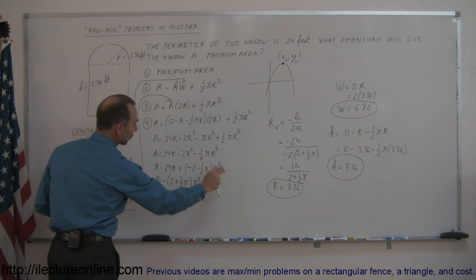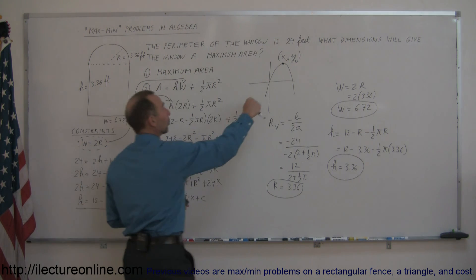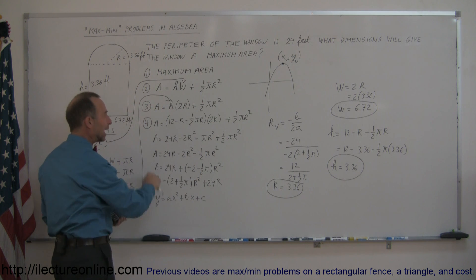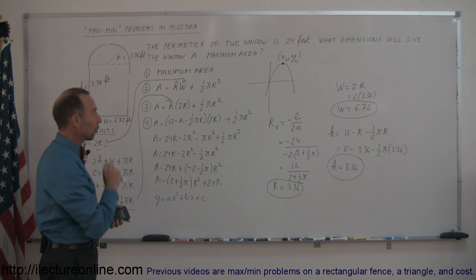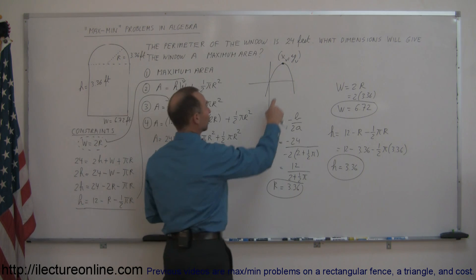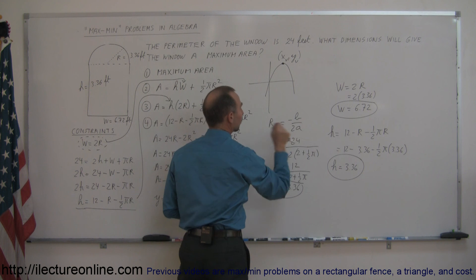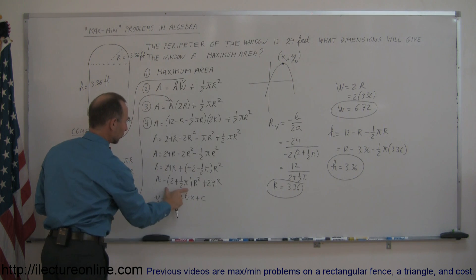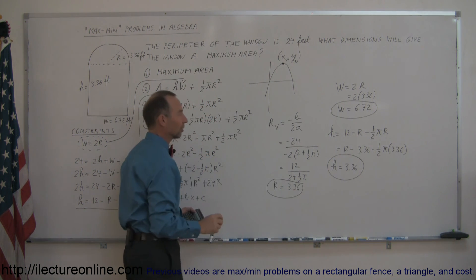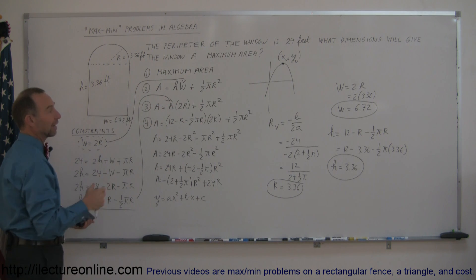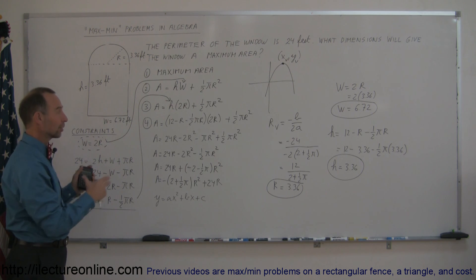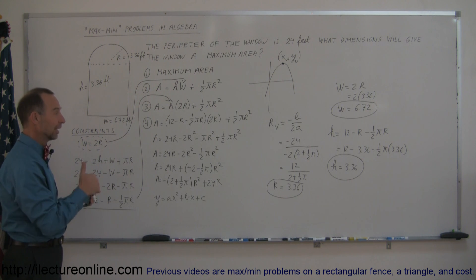This is your a, that's your b — you don't need a constant. Now look for the vertex, the highest point of the parabola. The r-coordinate of the vertex is always negative b over 2a. Recognize your b, recognize your a, plug those in, and solve — r is 3.36 feet. Then use your two constraints to find the other two variables, and that's how you work a problem like this. They don't come much more difficult than this, so if you can manage this one, you're in really good shape.